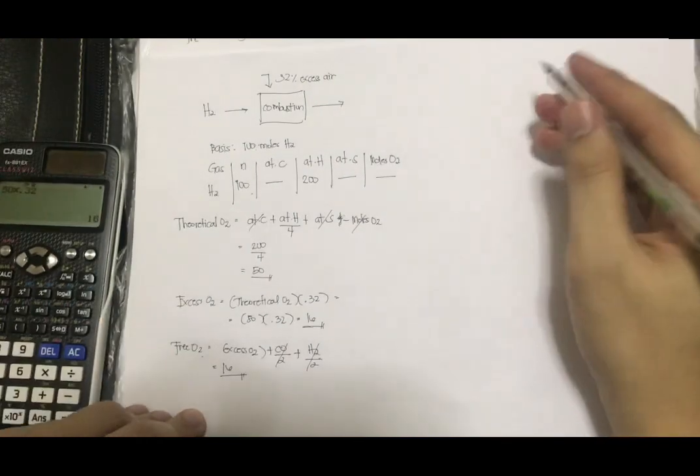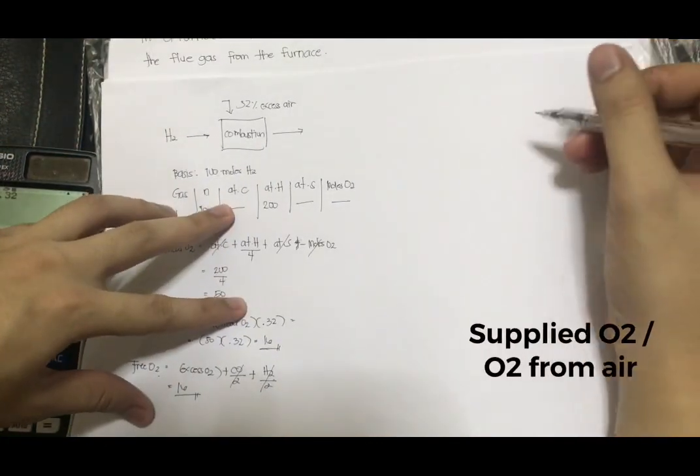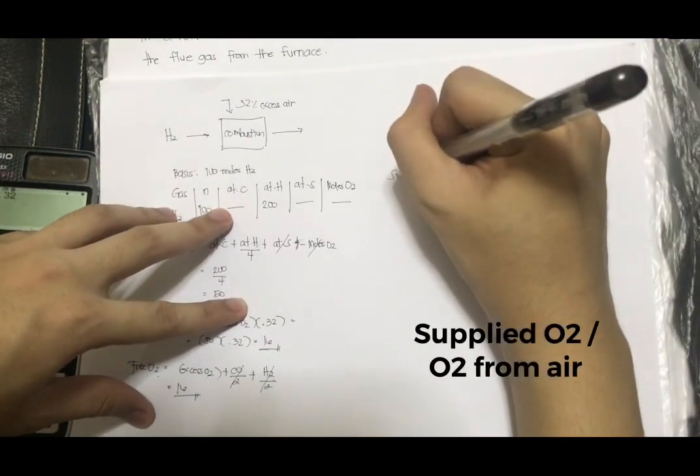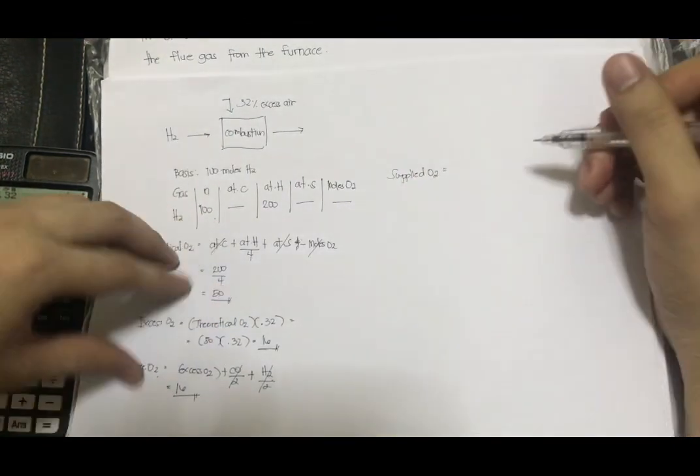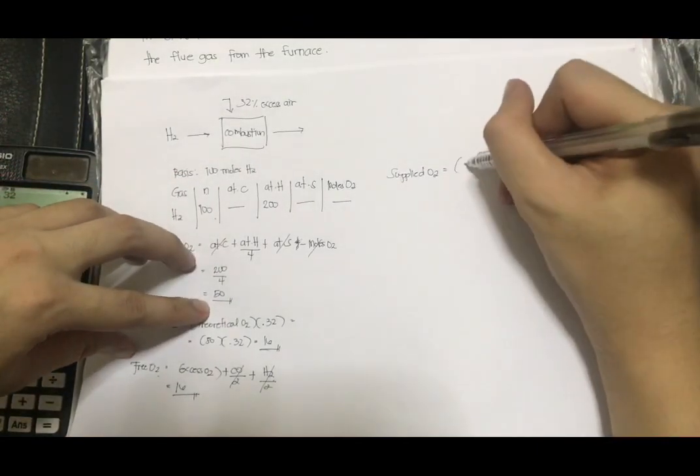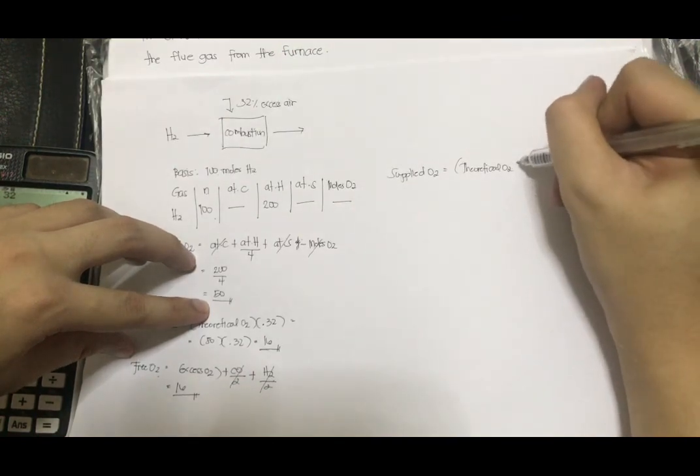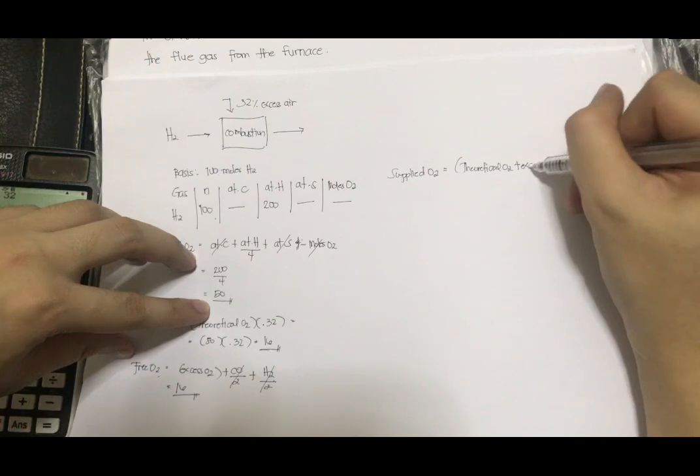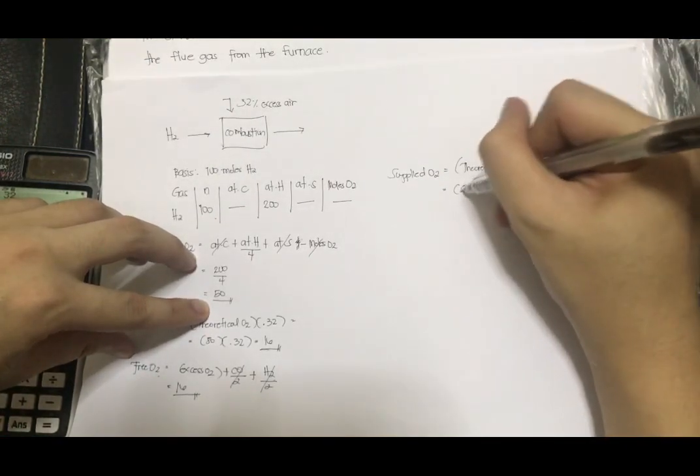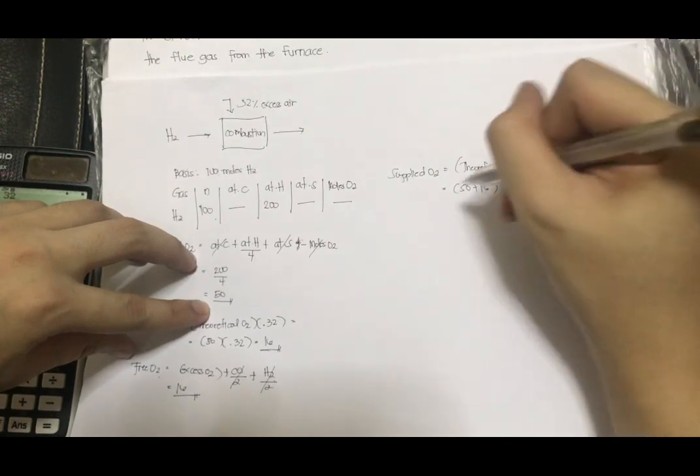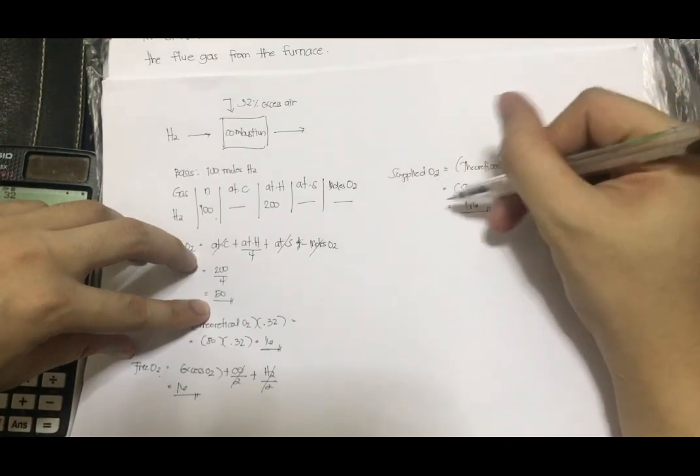So let's proceed to our next formula, which is the supplied O2. The formula for our supplied O2 is theoretical O2 plus excess O2. That's 50 plus 16. Our supplied O2 is 66.